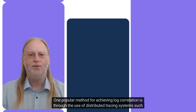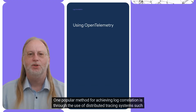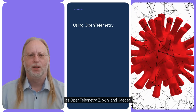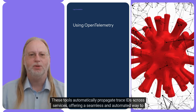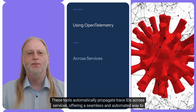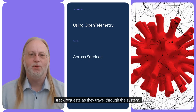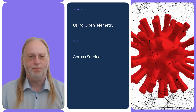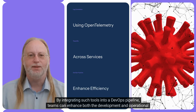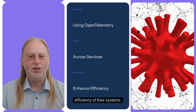One popular method for achieving log correlation is through the use of distributed tracing systems such as OpenTelemetry, Zipkin, and Jaeger. These tools automatically propagate trace IDs across services, offering a seamless and automated way to track requests as they travel through the system. By integrating such tools into a DevOps pipeline, teams can enhance both the development and operational efficiency of their systems.